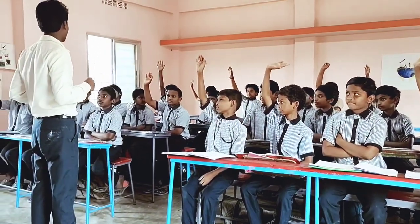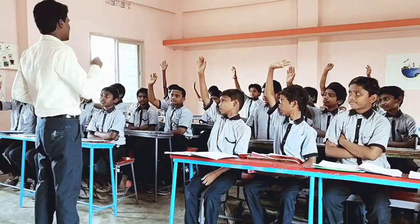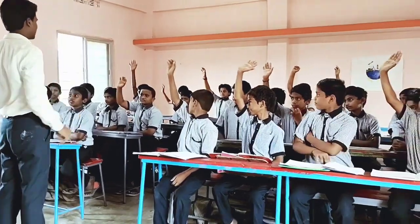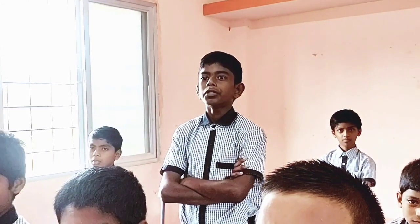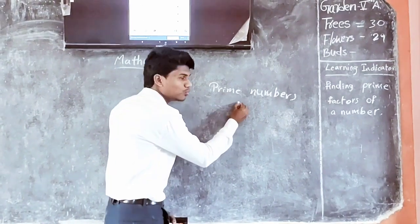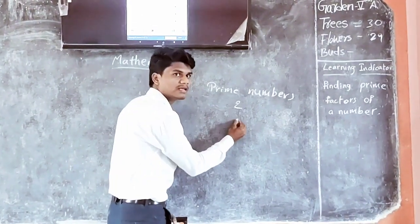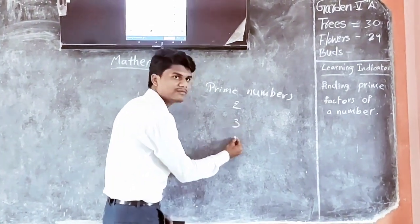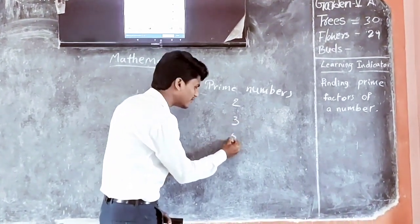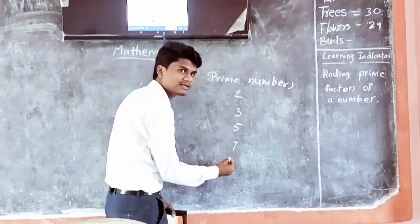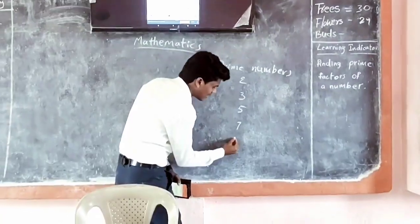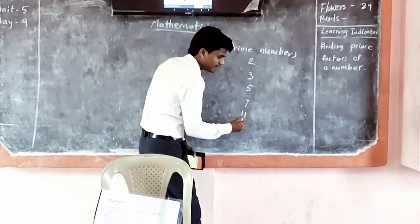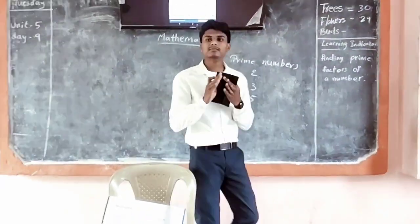Okay. What are the prime numbers? 2, 3, 5. Very good. 7, 11. Very good, clap at it.